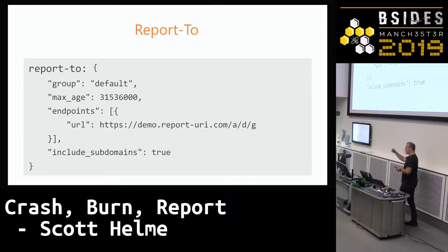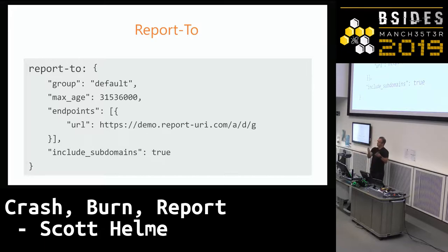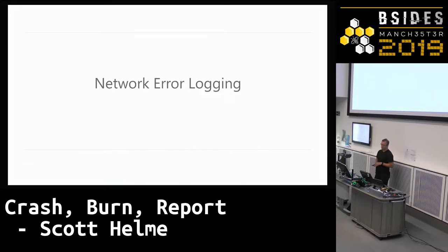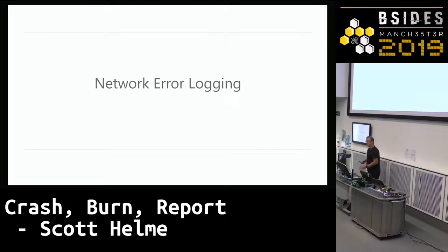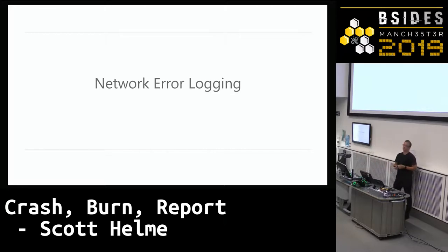That's the basic setup of the Reporting API — telling the browser where to send all error reports. Now you need to tell it what kind of things you want to know about. The most powerful one, which I've been spending a lot of time on recently, is something called Network Error Logging, or NEL. It's super powerful and super underutilized — looking at data from sites across the web, not many people are leveraging this.